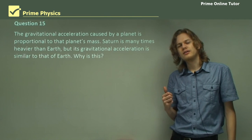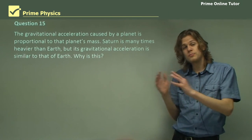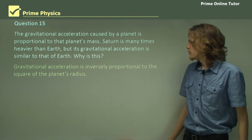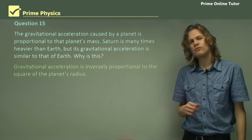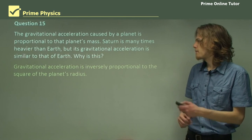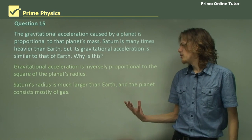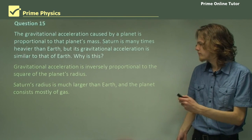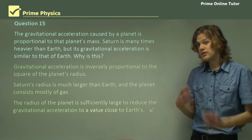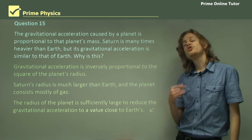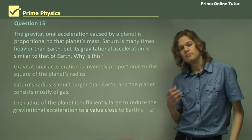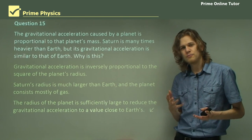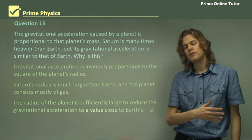So our answer here is that although gravitational force does depend on mass, that's not the only thing it depends on. Gravitational acceleration is inversely proportional to the square of the planet's radius as well. Saturn's radius is much larger than Earth, plus the planet consists mostly of gas, so it's not significantly heavier than Earth. That means that even though it is heavier, the radius of the planet is sufficiently large to reduce the gravitational acceleration. And it means that the gravitational acceleration right at the edge of Saturn is about 10.5 meters per second squared, as opposed to the 9.8 on Earth.